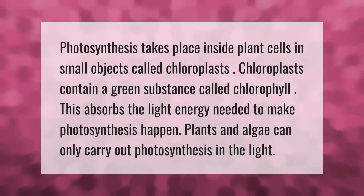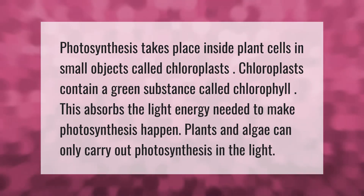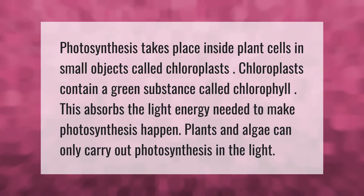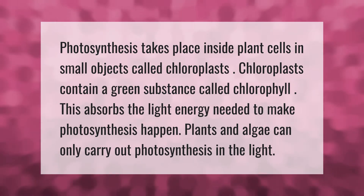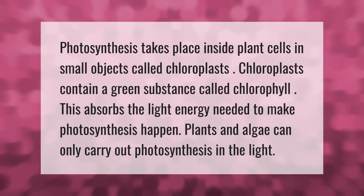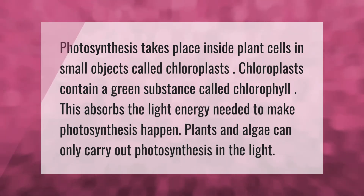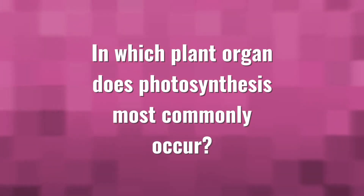Photosynthesis takes place inside plant cells in small objects called chloroplasts. Chloroplasts contain a green substance called chlorophyll, which absorbs the light energy needed to make photosynthesis happen. Plants and algae can only carry out photosynthesis in the light.